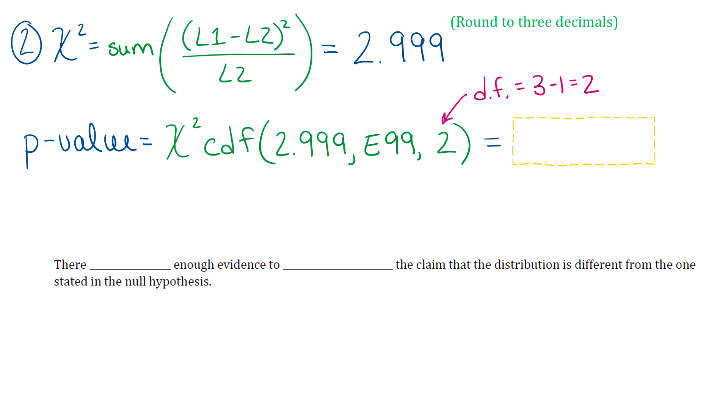And then once you have that, steps three and four, we know how to do those. So step three, you're going to compare that p-value with alpha. So I'll give you a hint. Whatever it is should come out to be greater than 0.05. So that means that we do not reject the null hypothesis.